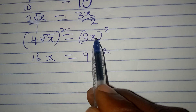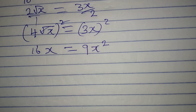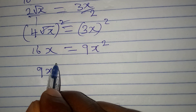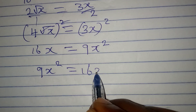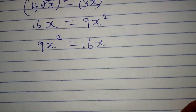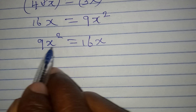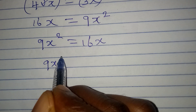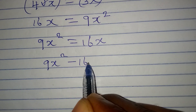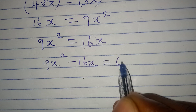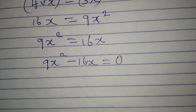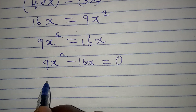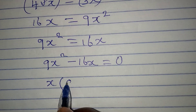This means that the squaring applies to both the 3 and the X. The next thing is to rearrange: we have 9X squared equal to 16X. Collecting everything to the left gives us 9X squared minus 16X equal to 0. This is a quadratic equation that we can factorize.